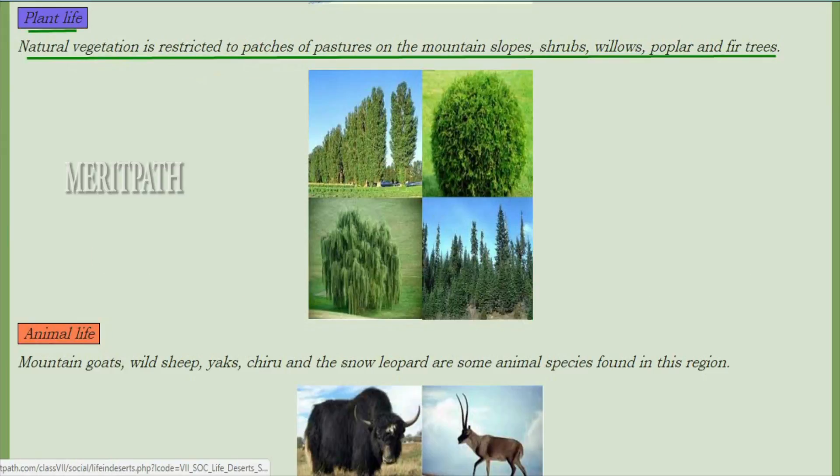Plant life in the Ladakh region is restricted to patches of pastures on the mountain slopes. Shrubs and willows are found there, and poplar and fir trees are also present.